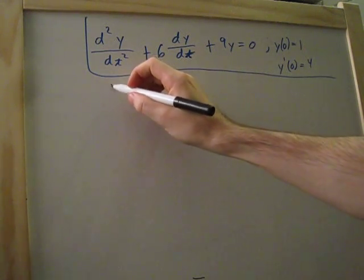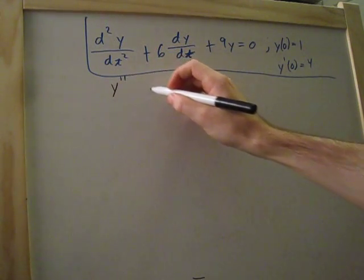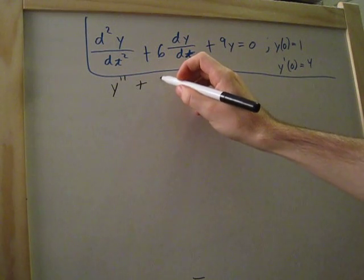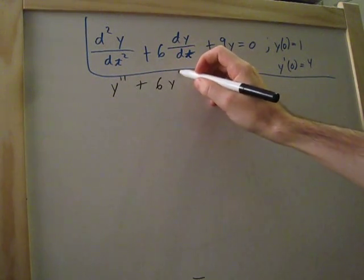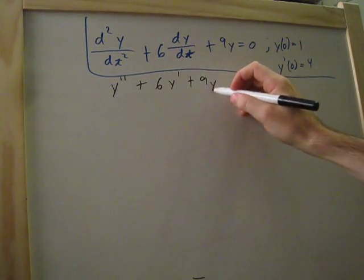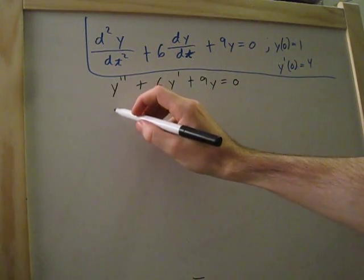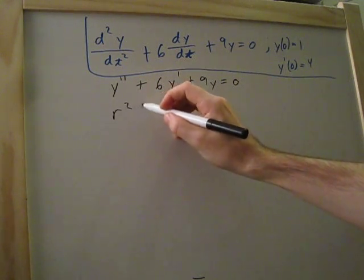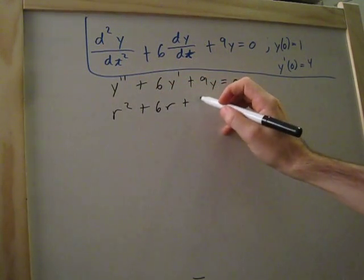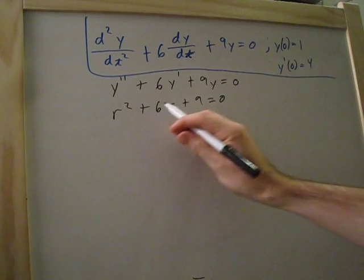Our first step, I like to put this into this form. Okay, so now we're in this, and then we can bring this down into the characteristic equation. So this is going to be r squared plus 6r plus 9.